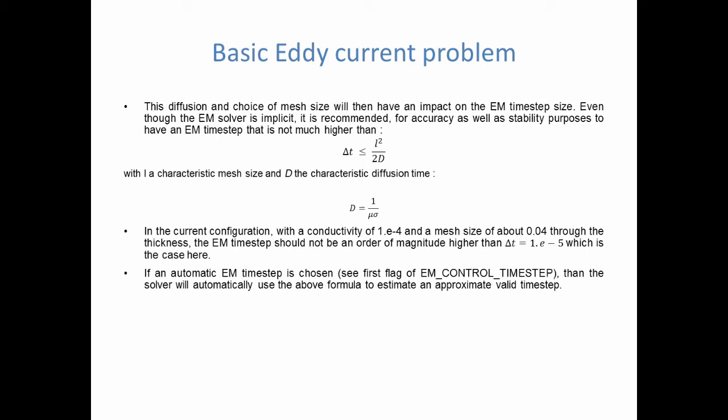And so what's the CFL condition for electromagnetic eddy currents? It's the formula which you see here below. The formula for the CFL condition is function of the mesh size L and then D the characteristic diffusion time which in turn is function of the vacuum permeability and the conductivity of the conductor.